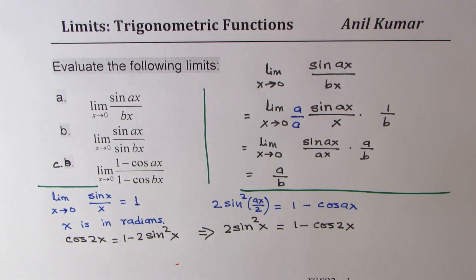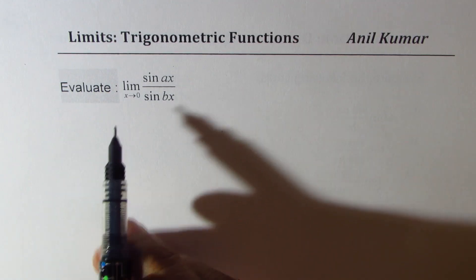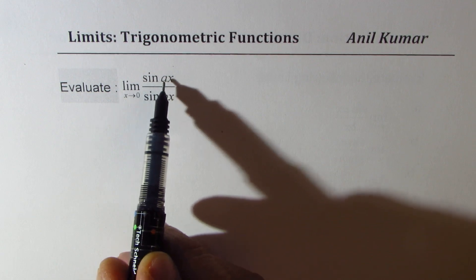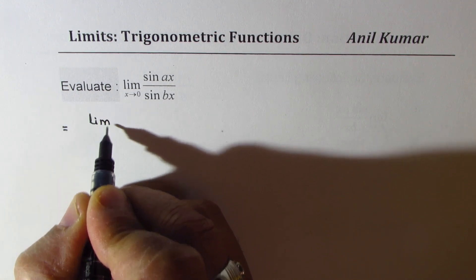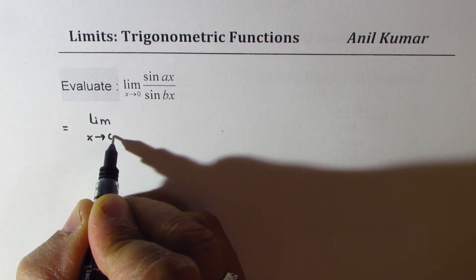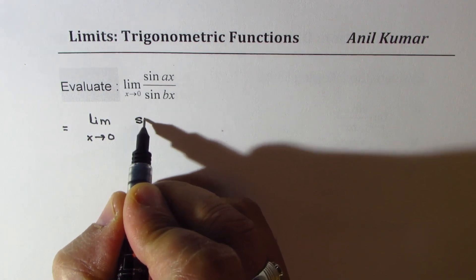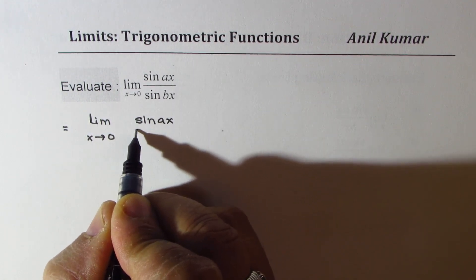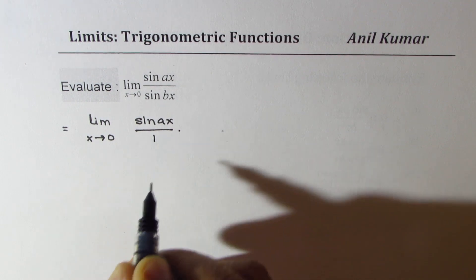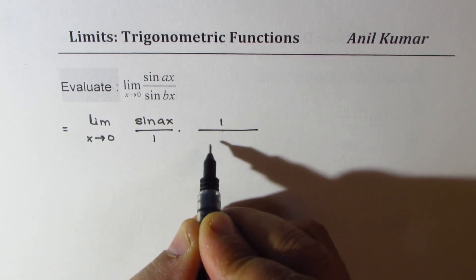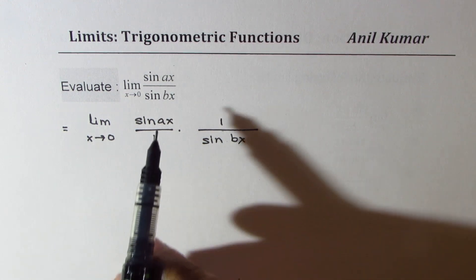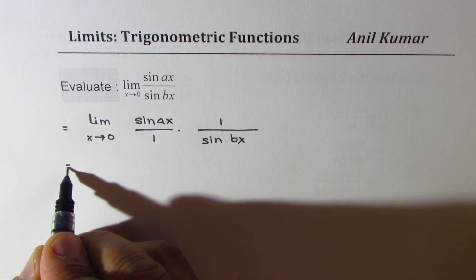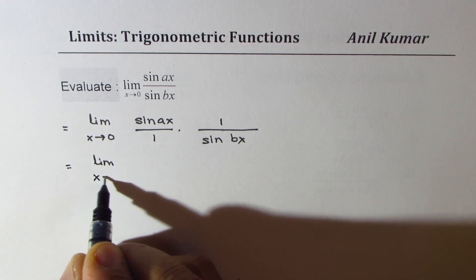You can now pause the video, answer your questions, and then look into my suggestions. Now we need to find the limit when x approaches 0 for sine ax divided by sine bx. We could write this as limit x approaches 0. Writing this separately — as sine of ax times 1 over sine bx — helps us to clearly show how we are getting the solution.